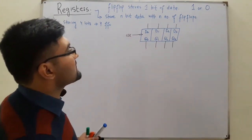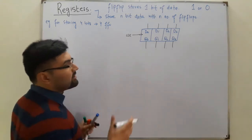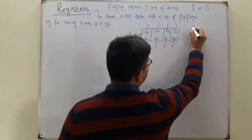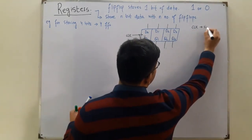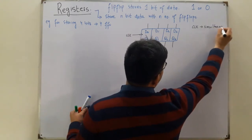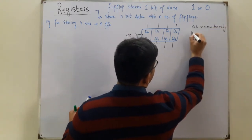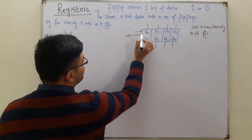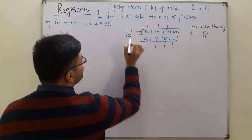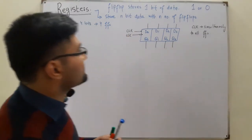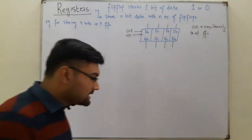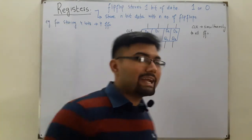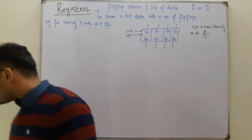The clock pulse is given simultaneously to all the flip-flops, which means these are like synchronous counters — the clock is given simultaneously to all flip-flops. We also have the clear signal, which is an active-low signal. The clock is negative-edge triggered, meaning the flip-flops operate on the negative edges of the clock pulse.